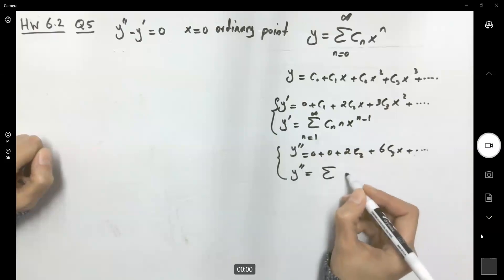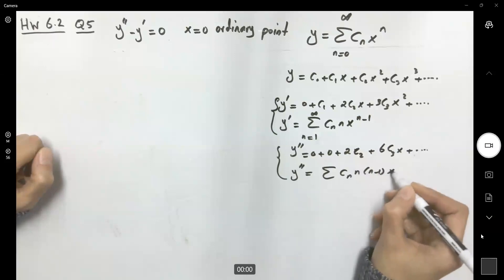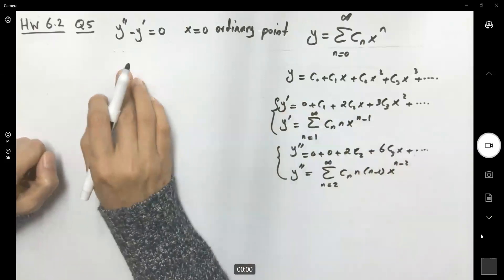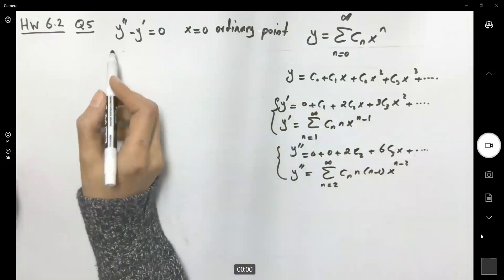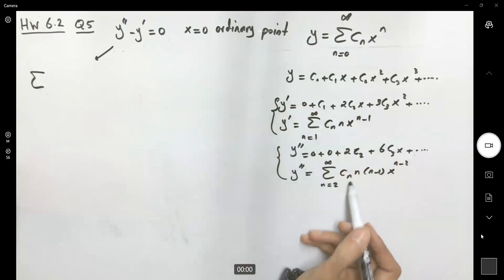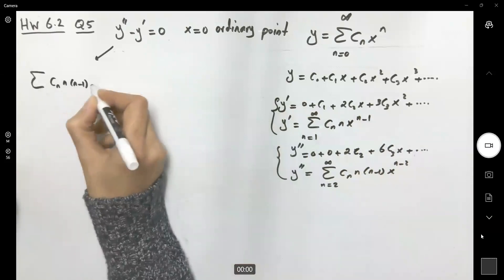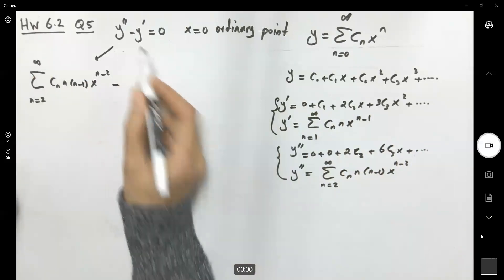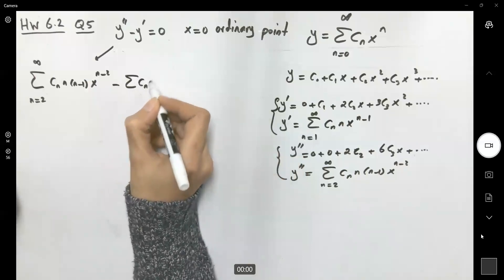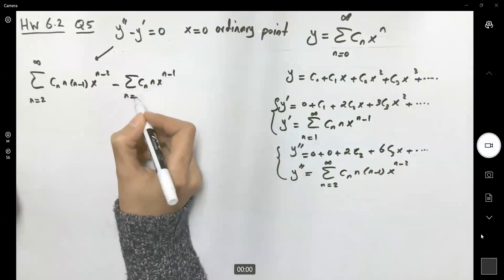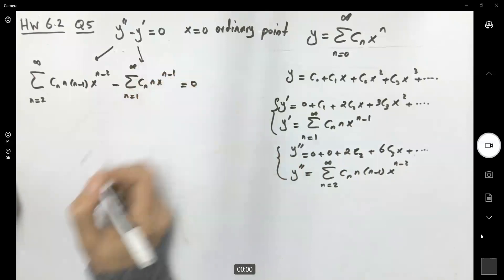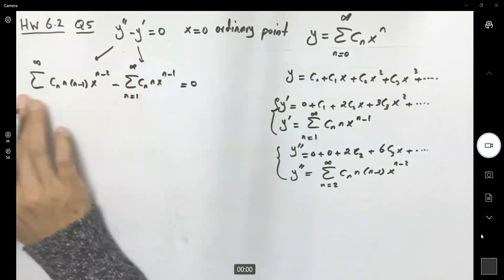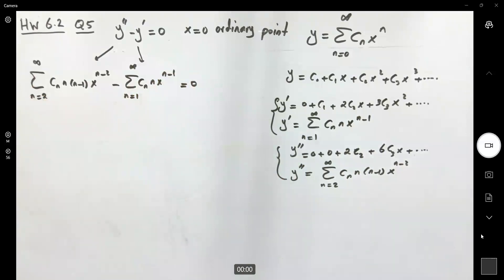The second derivative can be written as the sum of c_n · n · (n minus one) · x to the power n minus two, starting from n equals one to infinity, set equal to zero. Since the two series have different indices and different powers of x, you have to make index shifts before you can combine them.